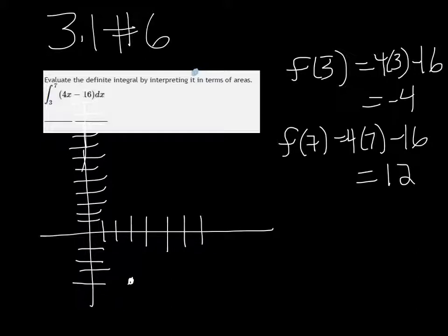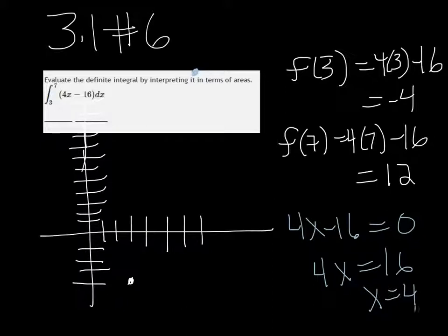And then we see that it crosses the x-axis, so it might be useful to know where that's happening. So if you just take 4x minus 16, set it equal to 0, we get that 4x equals 16. So when x is 4, y is 0. So it's crossing this point too. So if we put it all together,